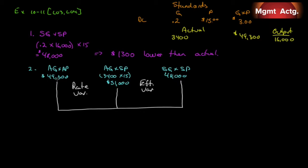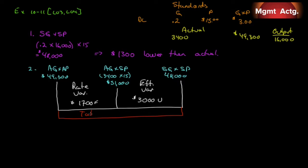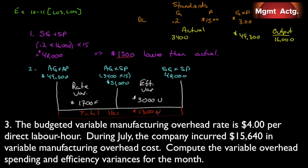The rate variance: $49,300 actually incurred versus $51,000 at standard price — we are $1,700 favorable. However, based on the output produced, we should have only spent $48,000, but actual hours at the standard price were $51,000 — so our efficiency variance is $3,000 unfavorable. With $1,700 favorable and $3,000 unfavorable, the total variance is $1,300 unfavorable, which matches requirement 1.